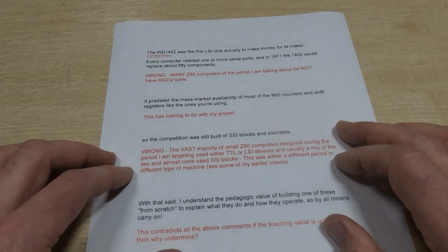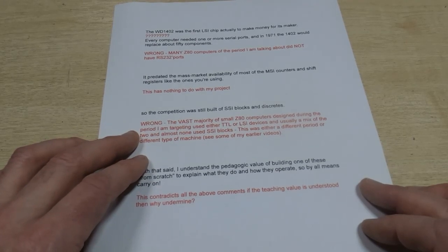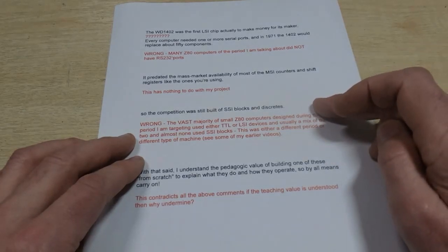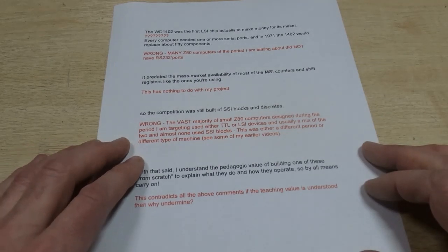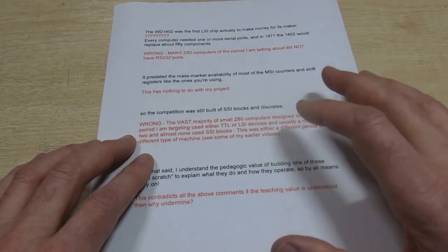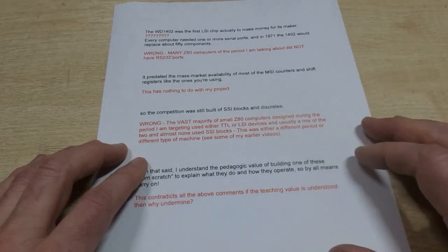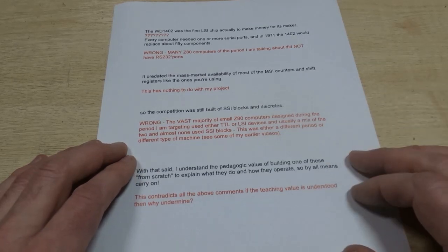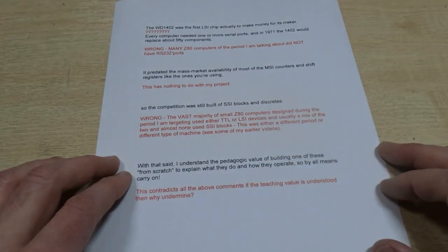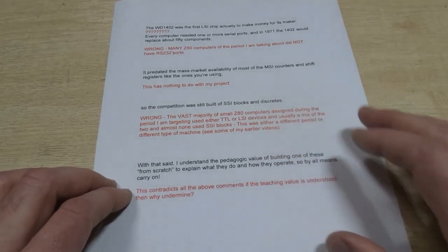I'm not sure what relevance that has whatsoever. So the competition was still built of SSI blocks and discrete. Wrong, absolutely incorrect. Some larger machines were built using SSI blocks—you see some of my previous videos on that. But the vast majority, if not all Z80 small computers built in the 1980s, use TTL logic, all the LSI devices that were brought out to support the Z80 and similar processors. So this is completely incorrect, and again I think that is he's either talking about a completely different type of computer or a completely different era, and it has nothing to do with our project.